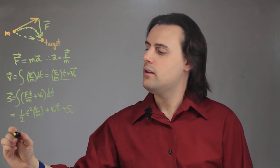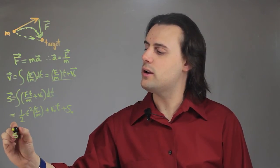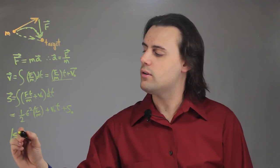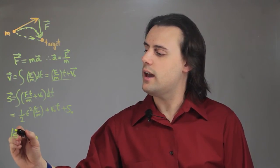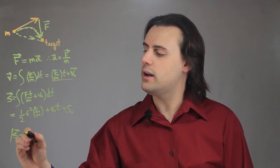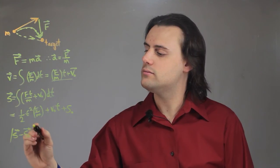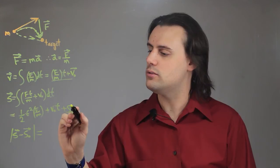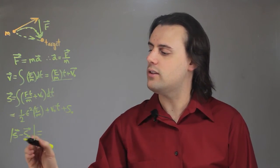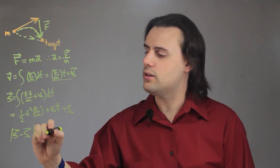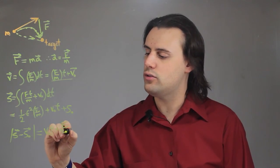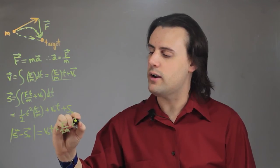So we end up with an expression for the distance, which is s minus s0, here I just brought the initial position over to the left hand side, is equal to the initial velocity times time plus F over 2m t squared.